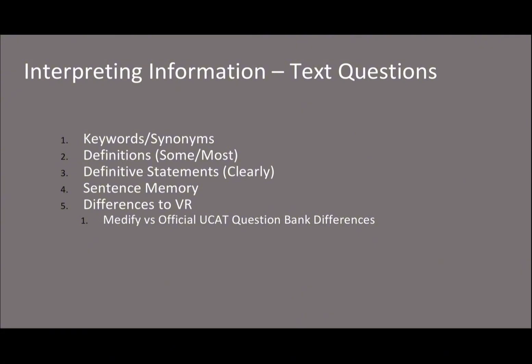Watch out for definitive statements — things when it says 'this is that,' 'this will be that,' or 'this will lead to that.' These generally tend to require more information from the text, because you have to be able to conclude it definitively. Remember, the definitions for yes and no are exactly the same in interpreting information as they are in syllogisms. If you're unfamiliar, you can go back and check out my syllogisms video on the arrow method.